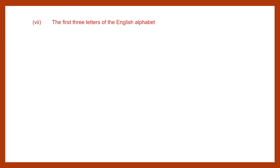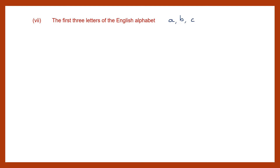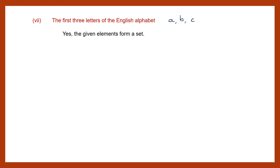Question 7: the first three letters of the English alphabet. What are the first three letters of the English alphabet? A, B, and C. Now this is very well defined because these are the only first three letters of the English alphabet. So yes, the given elements form a set.